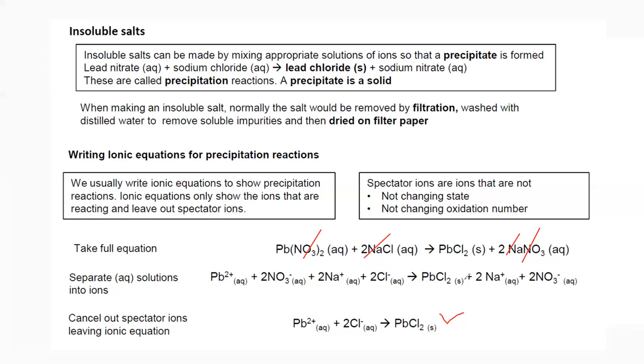To write the ionic equation, cancel out the common ions in aqueous substances. Nitrate and sodium are common, so we cancel them, leaving lead ion plus chloride giving lead chloride (PbCl₂). If the mole ratio is 1:2, the volume ratio should also be 1:2; if 1:1, volumes should be equal.